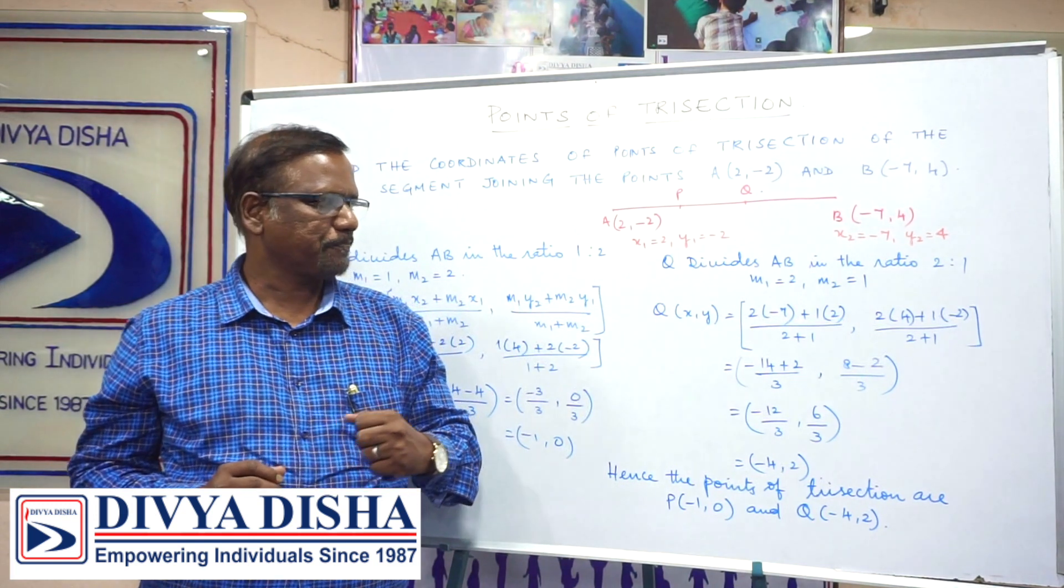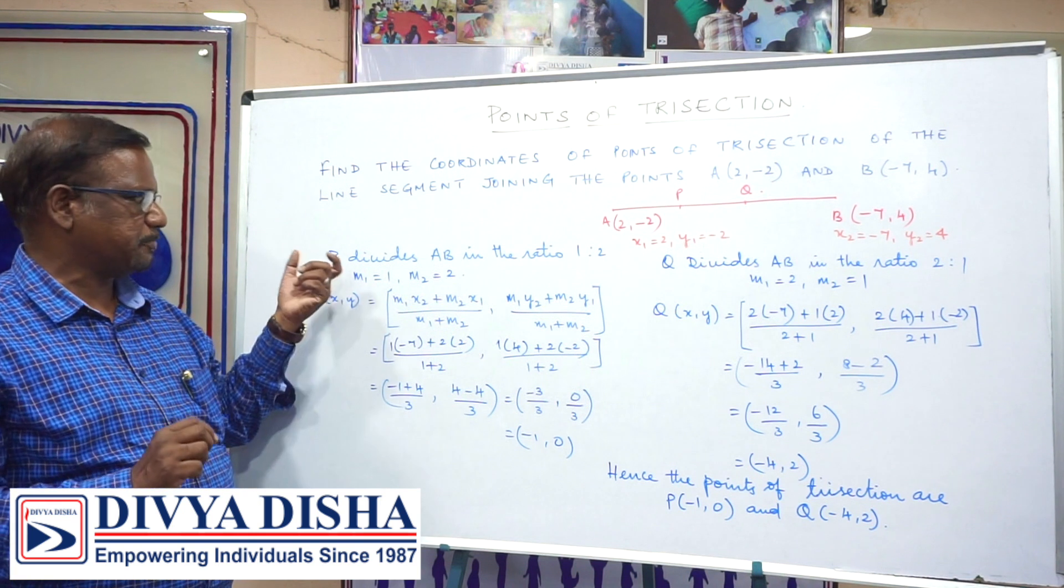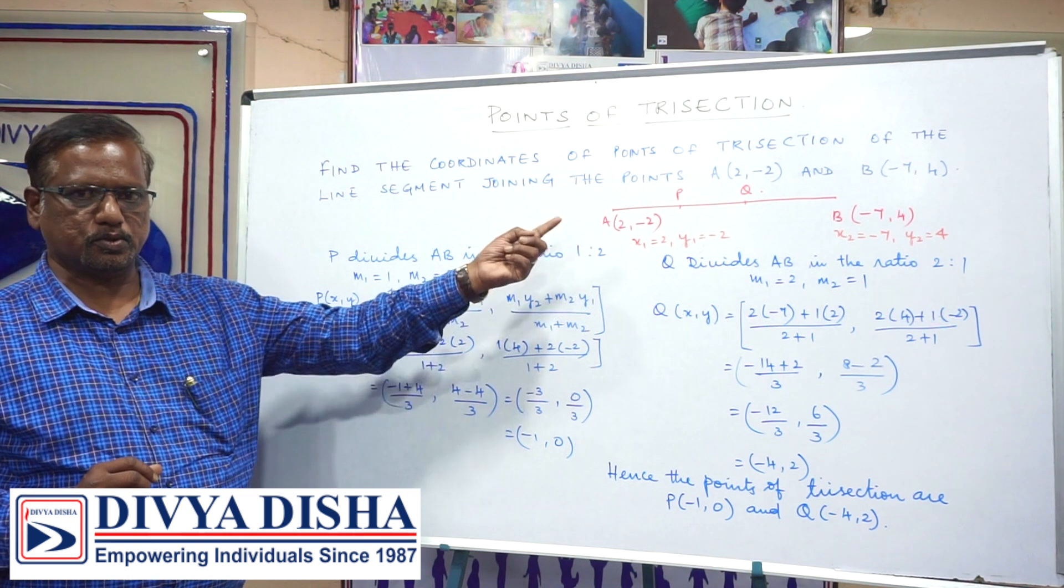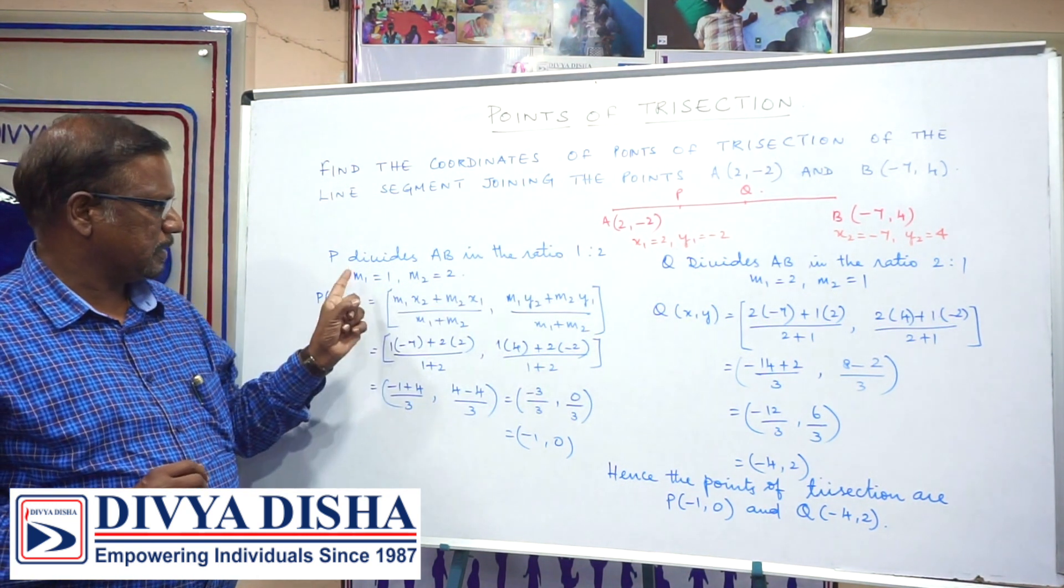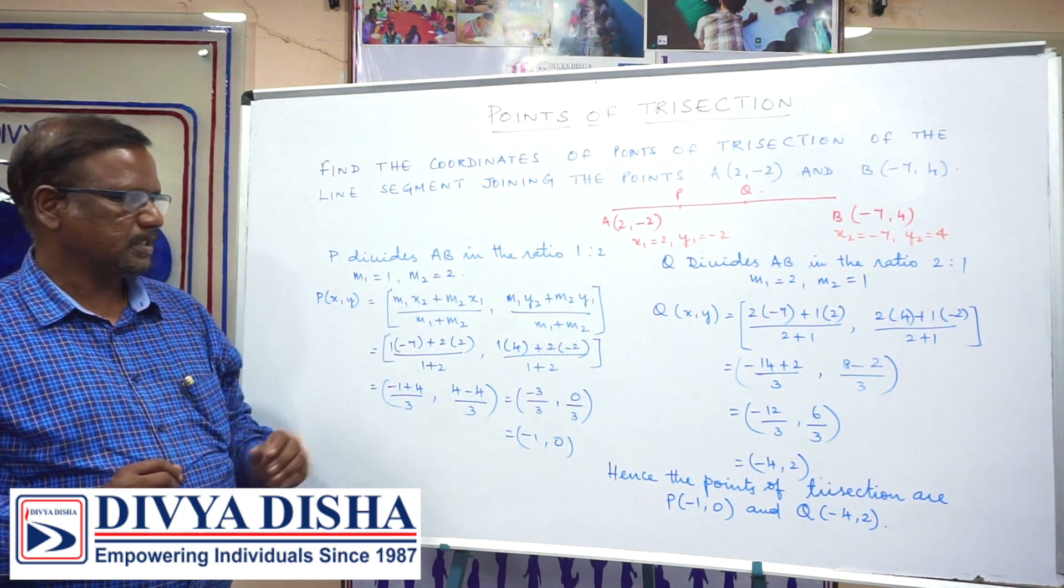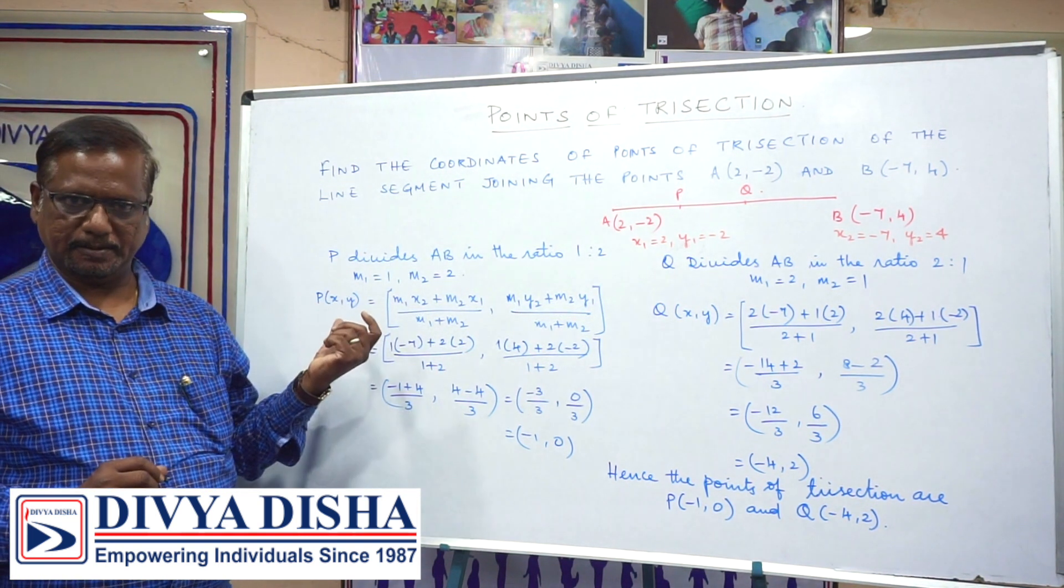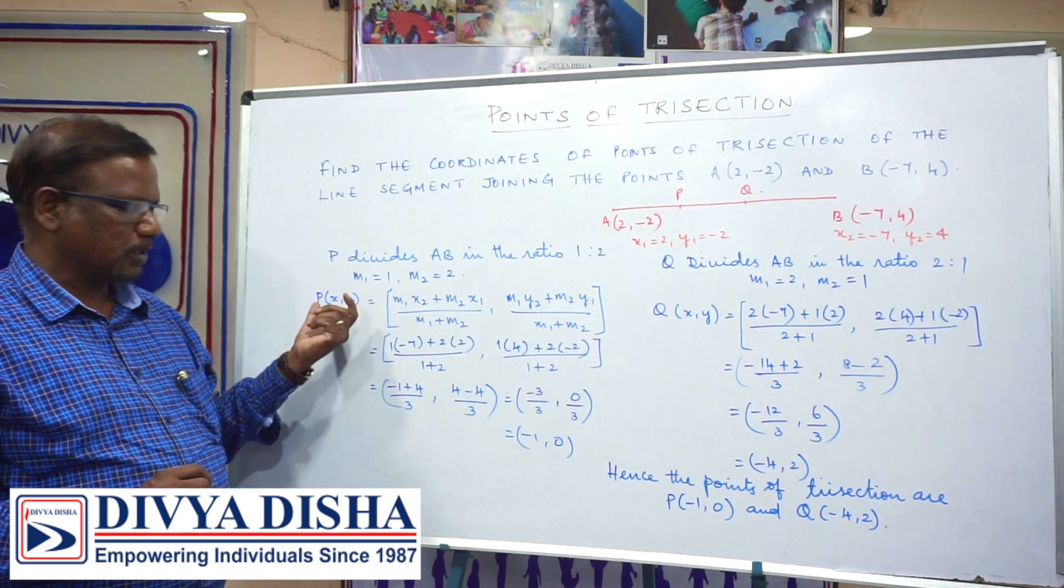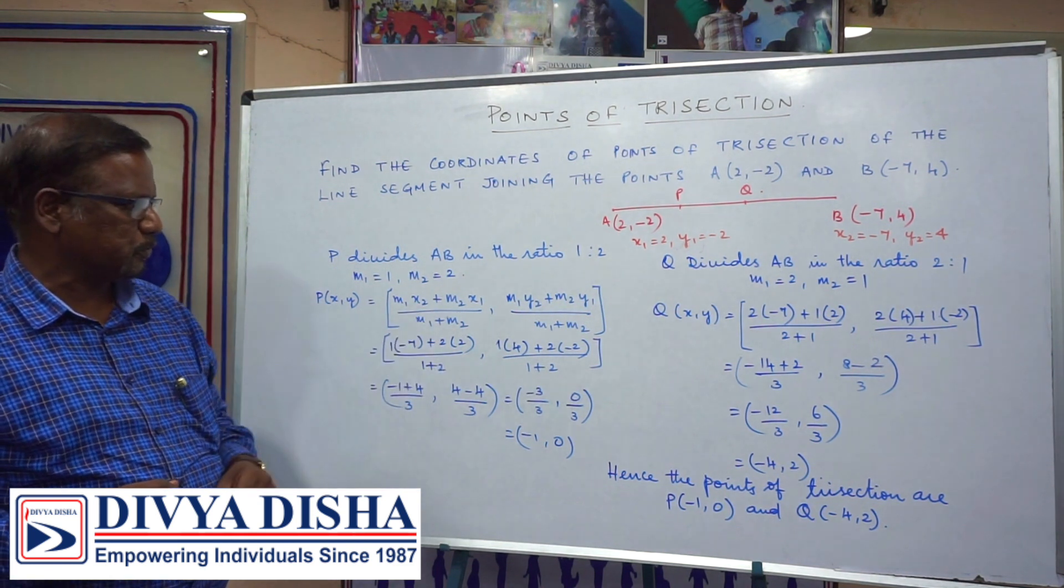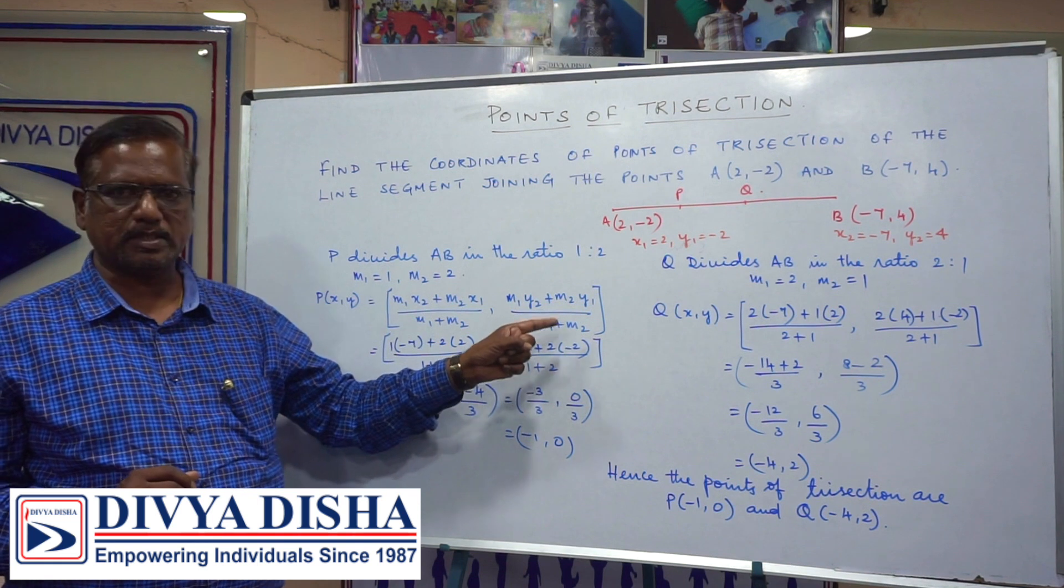The point of trisection formula is: P(x,y) is equal to (m1·x2 + m2·x1) divided by (m1 + m2), and (m1·y2 + m2·y1) divided by (m1 + m2).